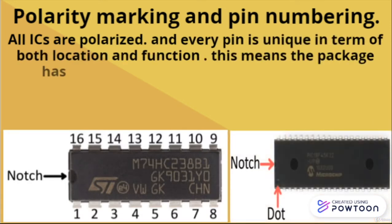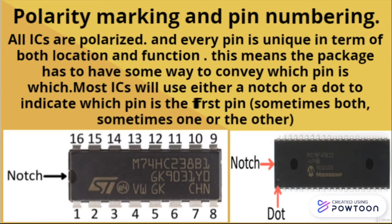Polarity marking and pin numbering: all ICs are polarized, and every pin is unique in terms of both location and function. The package must have some way to indicate which pin is which. Most ICs use either a notch or a dot to indicate the first pin — sometimes both, sometimes one or the other. As we can see in these images, this IC has 16 pins and indicates pin one with a notch.